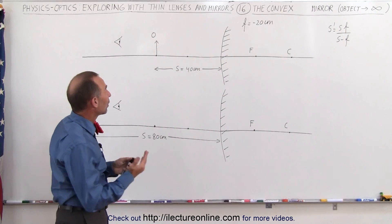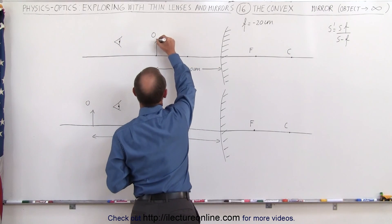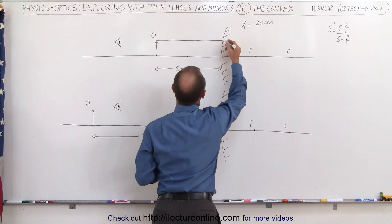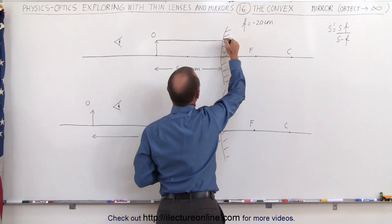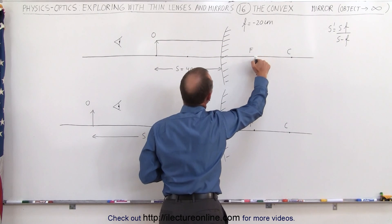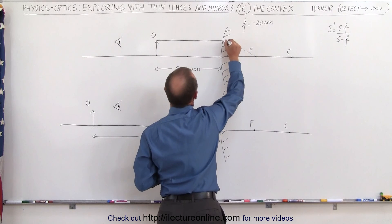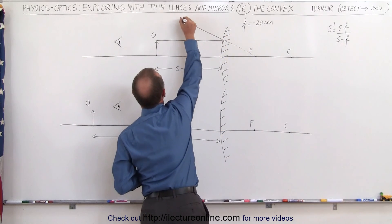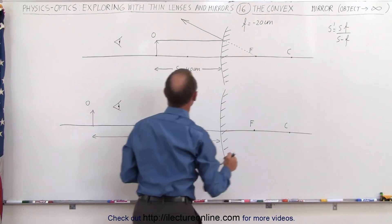Now let's find out where the image will appear. Draw the first ray from the top of the object to the mirror. At that point it will reflect off the mirror, but it will appear as if the ray came from the focal point behind the mirror. Draw a line from there and continue on in this direction. The observer will see this ray coming from behind the mirror.